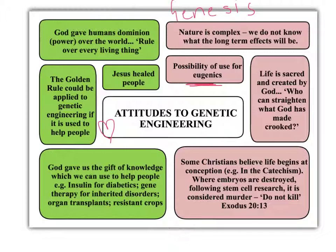Religious arguments include the idea that life is sacred and created by God. Since people, according to Christians, were made in God's image, it can be argued that they're sacred and made as God wanted them to be. Another quotation from the Bible is 'who can straighten what God has made crooked,' suggesting that we shouldn't be messing with what God has created. Some Christians believe life begins at conception, and in the Roman Catholic Catechism it says that where embryos are destroyed, it constitutes murder, because life must be respected as full life from the moment of conception.